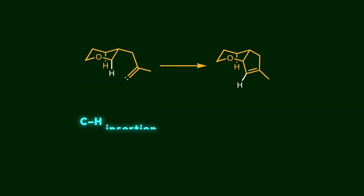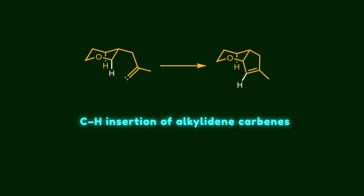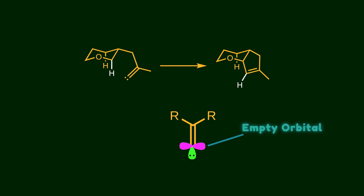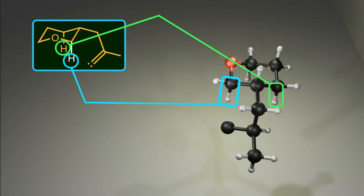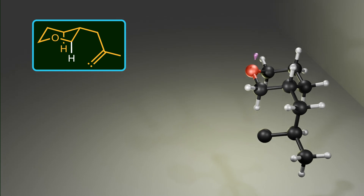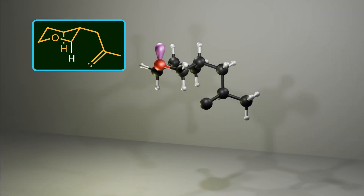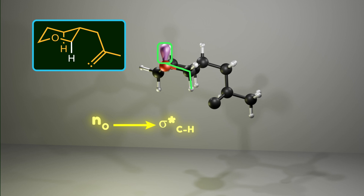Another interesting example is C-H insertion of alkylidene carbenes. Recall from introductory organic chemistry that a carbene center has an empty orbital along with a filled orbital, so it can act as both a donor and an acceptor simultaneously. C-H insertion of alkylidene carbenes occurs through a concerted process — in the transition state, the carbon-hydrogen bond is breaking while a new carbon-carbon bond is forming at the same time. Notice there are two hydrogens at the same distance from the carbene center: one attached to a carbon atom and one attached to an oxygen. The anomeric effect controls this reaction, because the non-bonding electrons of oxygen are anti-periplanar to the axial carbon-hydrogen bond, weakening it and making it more reactive.